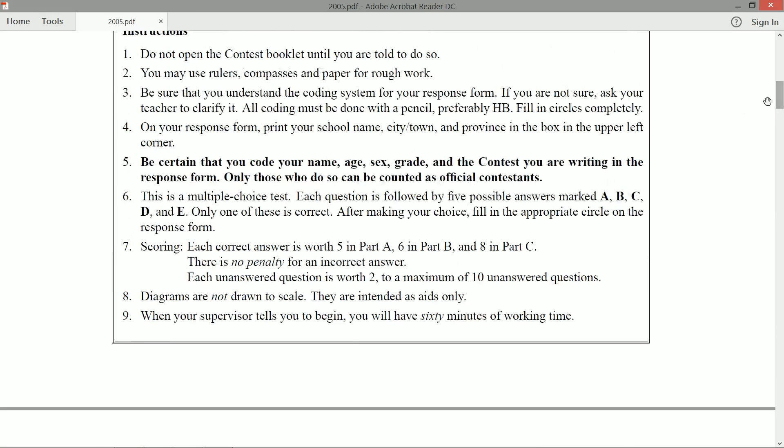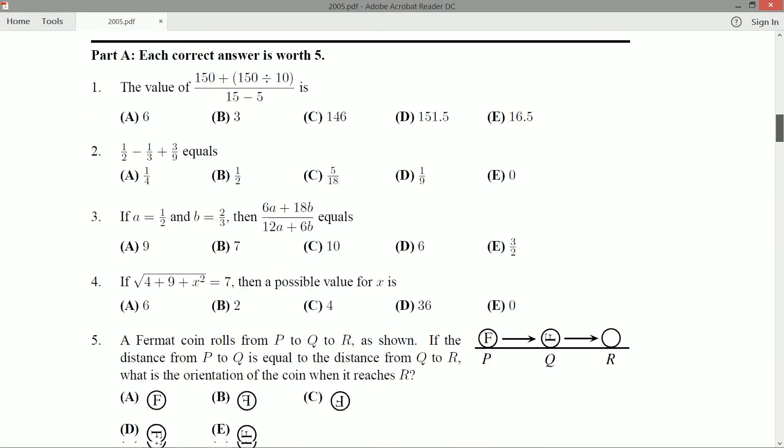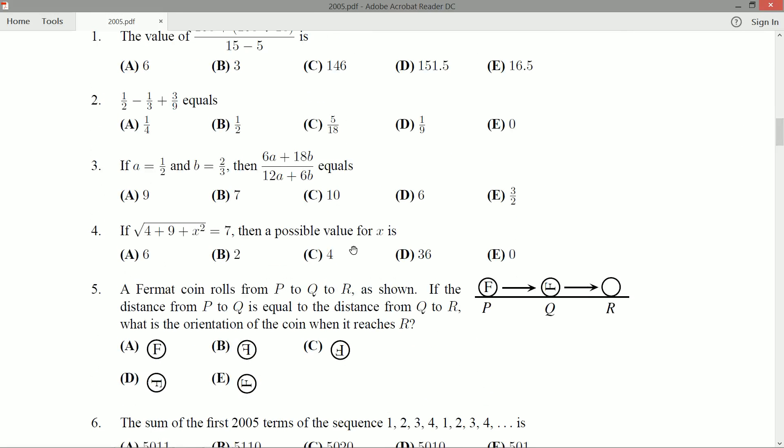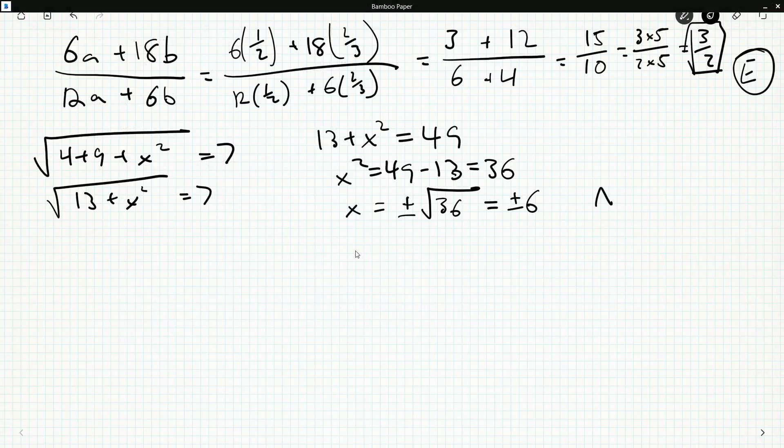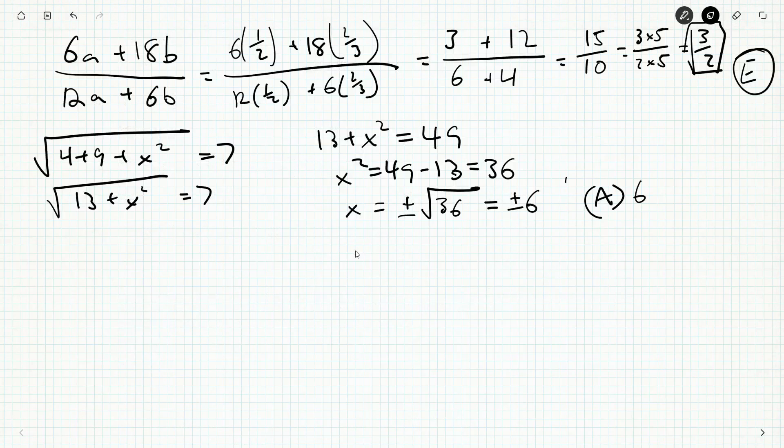If we go to the contest rules, only one of the answers is correct. So if we saw six and minus six, we would know we did something wrong, but fortunately we didn't. A is going to be our answer. A, six.